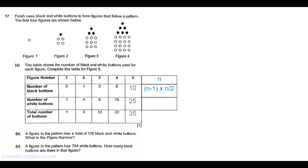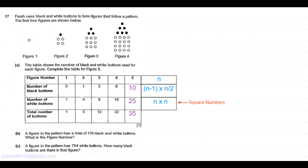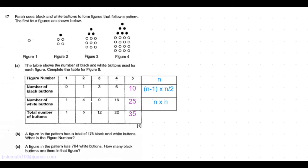Now coming to the number of white buttons, it follows the square numbers, which means it is n times n. So for pattern 2, it is 2 times 2. Pattern 3 is 3 times 3, and so on. So that is very straightforward. Now coming to the total number of buttons, we just have to add up the 2.